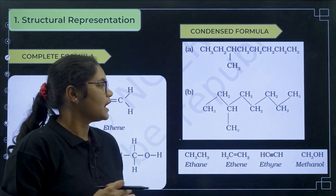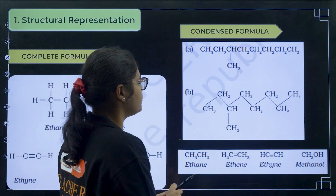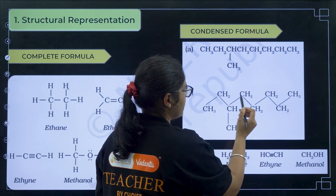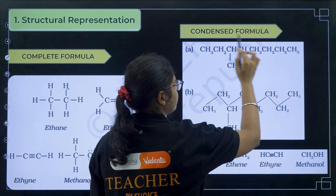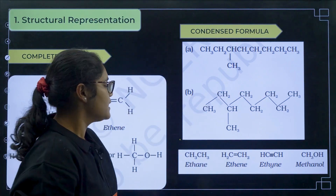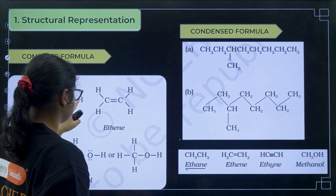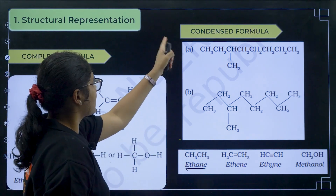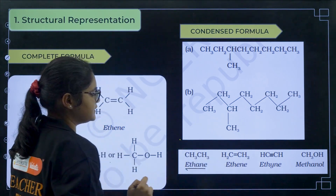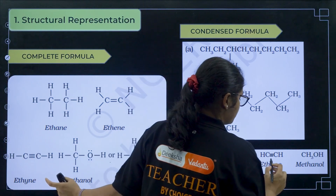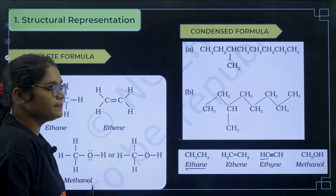Condensed formula means you do not represent all the bonds — you just represent the carbon-carbon bond. This is also a type of condensed formula where we represent only the carbon-carbon bond; the carbon-hydrogen bond is not represented. Here we have not represented any bond, just written the formula — that is also condensed formula. For example, ethane drawn completely is the complete formula, but if I write CH3CH3, it is the condensed formula. For ethene, CH2=CH2 is the condensed formula. If I write CH3OH with no bond shown, that is also a condensed formula.